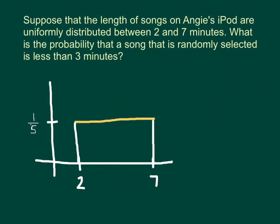Okay, so now let's look at the second part of the question. What is the probability that a song that is randomly selected is less than three minutes? So on my x-axis I'm going to identify where three minutes is. And less than three minutes is everything to the left of that. And so the area I'm looking for is that little rectangle there.